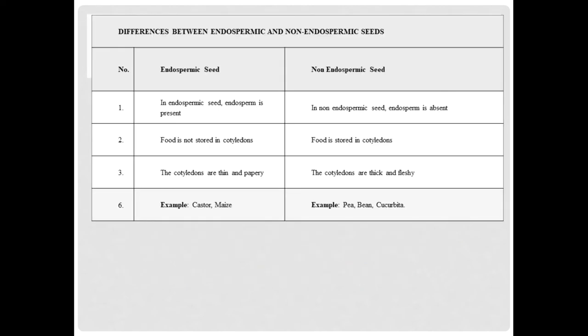Now let's look at the differences between endospermic and non-endospermic seeds. In endospermic seeds, endosperm is present, while in non-endospermic seeds food is stored in cotyledons. In endospermic seed, the cotyledons are thin and papery, but in non-endospermic seed, the cotyledons are thick and fleshy. Examples of endospermic seeds are castor and maize. Examples of non-endospermic seeds are pea, bean, and cucurbits.